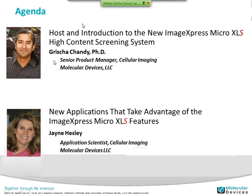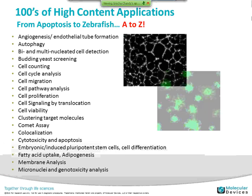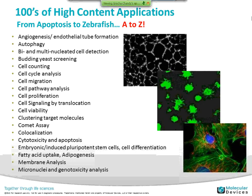I'm the product manager for cellular imaging here at Monaco Devices, and I'll do a little introduction on the new ImagePress Micro XLS, which we're excited to be launching. Jane's going to be looking at some applications that take advantage of the new features of the IXM XLS. Just a quick short introduction to high content applications in general — these are essentially automated microscopes that allow you to do a variety of applications, from apoptosis to zebrafish, from A to Z. Here's a list and some sample images collected over the years with our product.